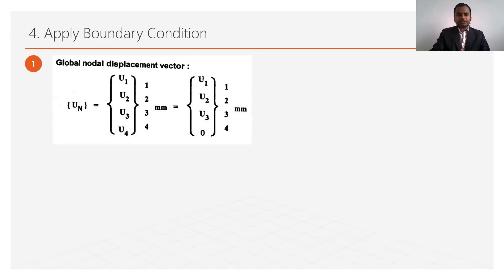The body is fixed at node number 4 (the last node), so u4 = 0. The remaining nodes are free, so we need to calculate the values of u1, u2, and u3.